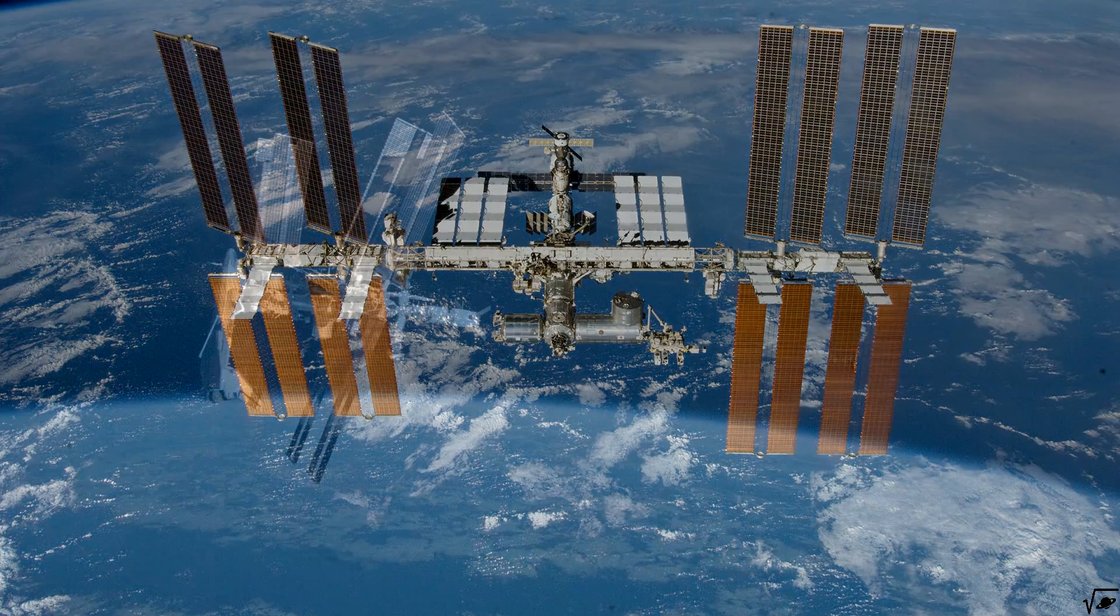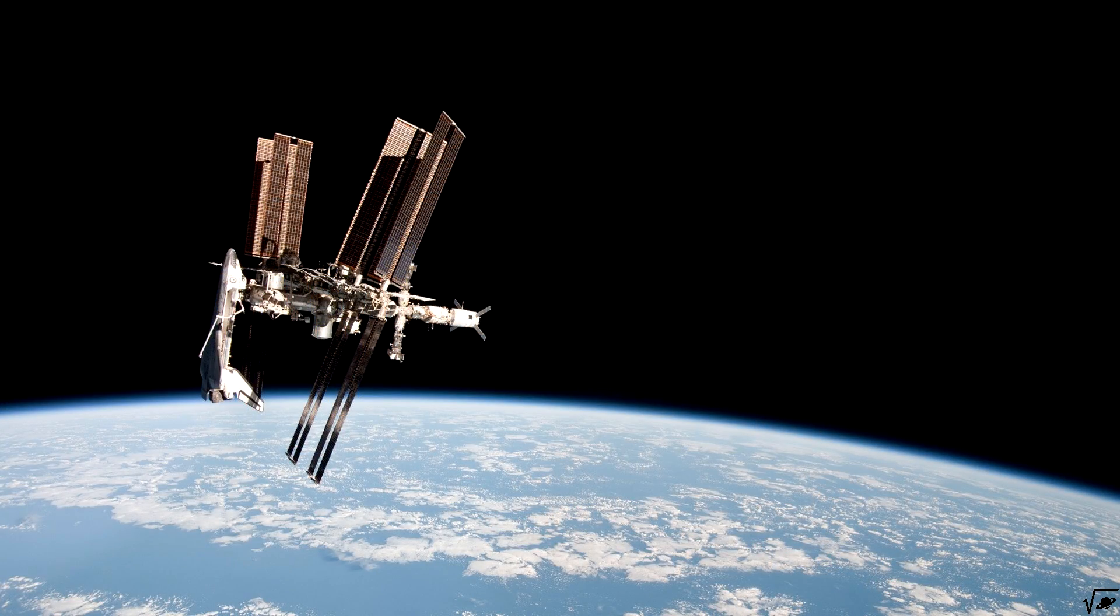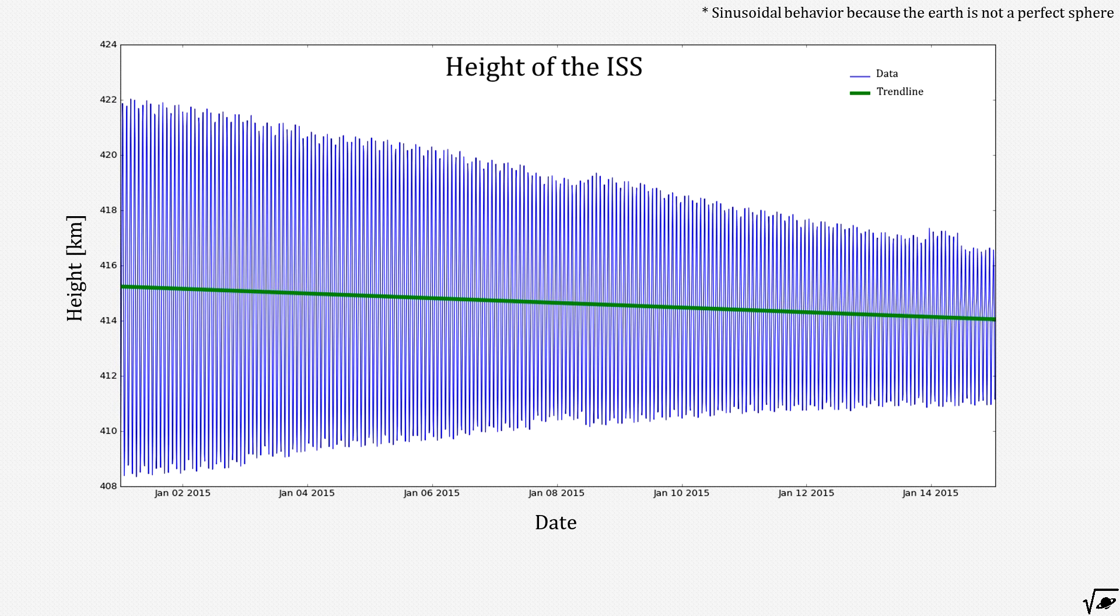At 415 kilometers high, there is not much atmosphere left, but the ISS falls down due to the drag with about 85 meters per day. How is that possible?